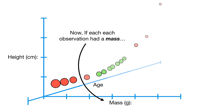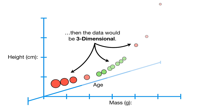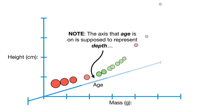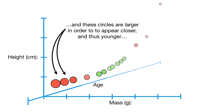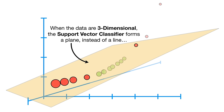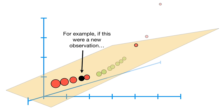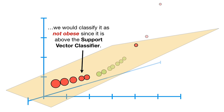If each observation has a mass, a height, and an age, then the data would be three-dimensional. The axis that age is on is supposed to represent depth — larger circles appear closer and thus younger, and smaller circles appear further away and thus older. When the data are three-dimensional, the support vector classifier forms a plane instead of a line, and we classify new observations by determining which side of the plane they are on. For example, a new observation above the support vector classifier would be classified as not obese.